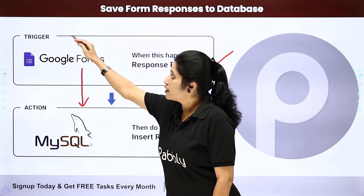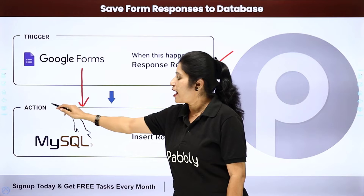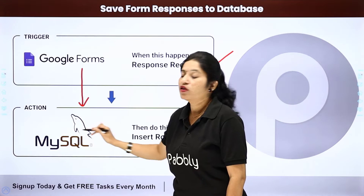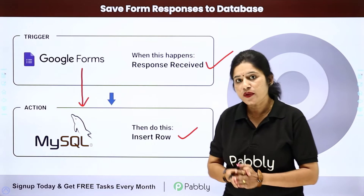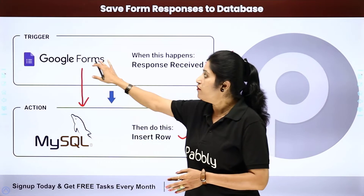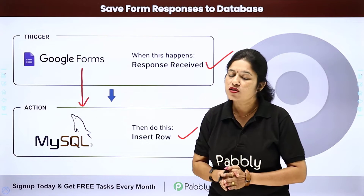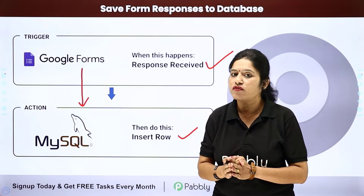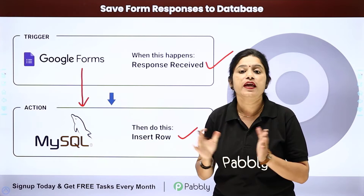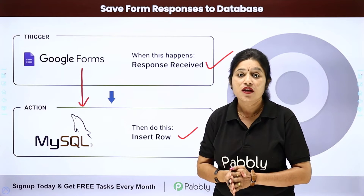In this automation, your trigger application would be Google Forms and your action application would be MySQL. We are using Google Forms to create the forms, but in place of Google Forms, you can also use Jot Form, Type Form, or any other form building software application.